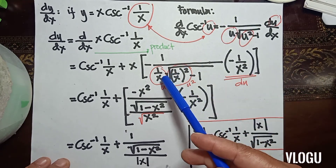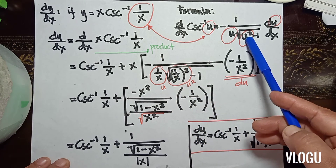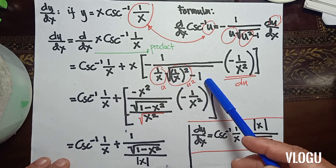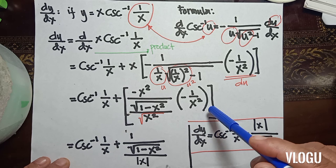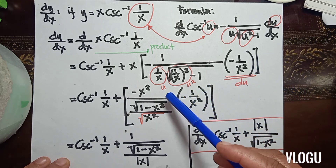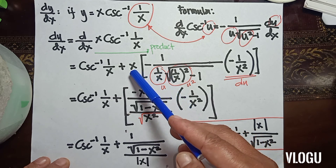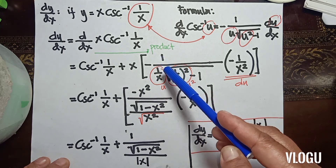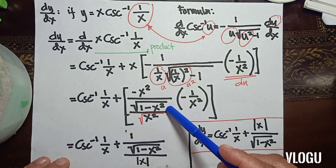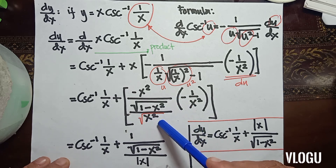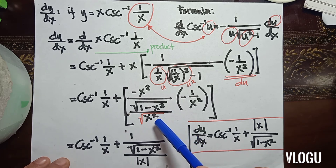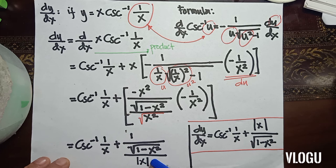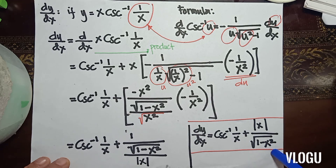The formula for cosecant inverse gives negative 1 over u (where u is 1/x) times the square root of u squared minus 1, with u = 1/x giving (1/x) squared minus 1. Looking at the simplification, we have 1/x, and x multiplied gives x squared in the numerator. The LCD under the square root is x squared, giving the square root of (1 minus x squared), and the square root of x squared equals the absolute value of x. Therefore, the final answer is cosecant inverse (1/x) plus the absolute value of x over the square root of 1 minus x squared.